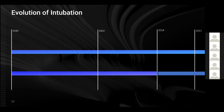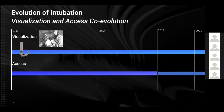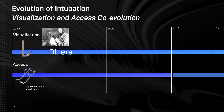Now we'll get into the evolution of the co-components — this is a story of visualization and access co-evolution. We start at 1940 and go through today. The top timeline is visualization components, the bottom is access components. Around 1940 is when we started intubating people regularly, and we used direct laryngoscopy. The first DLs were around the turn of the century, but we didn't intubate people regularly. It really hasn't changed since then — effectively it's a light on a stick, and we move the tongue and jaw out of the way. Access tools were malleable stylets and rigid introducers, all sharing the characteristic of being static — once you shape them, you cannot reshape them while in use.